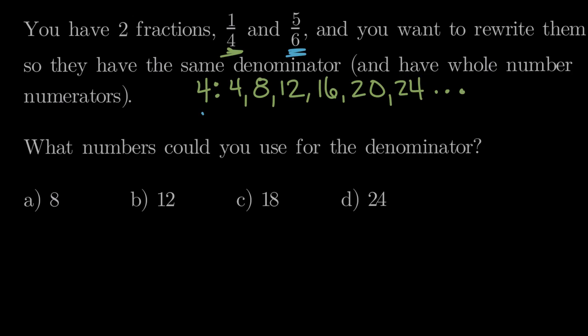Let's do the same for 6ths. We could leave our 6ths alone — 6×1=6. Or double them: 6×2=12. Or 6×3=18. Or divide each sixth into 4 pieces: 6×4=24. And so on. Again, I'll stop at 24 since it's the largest number we need to consider.